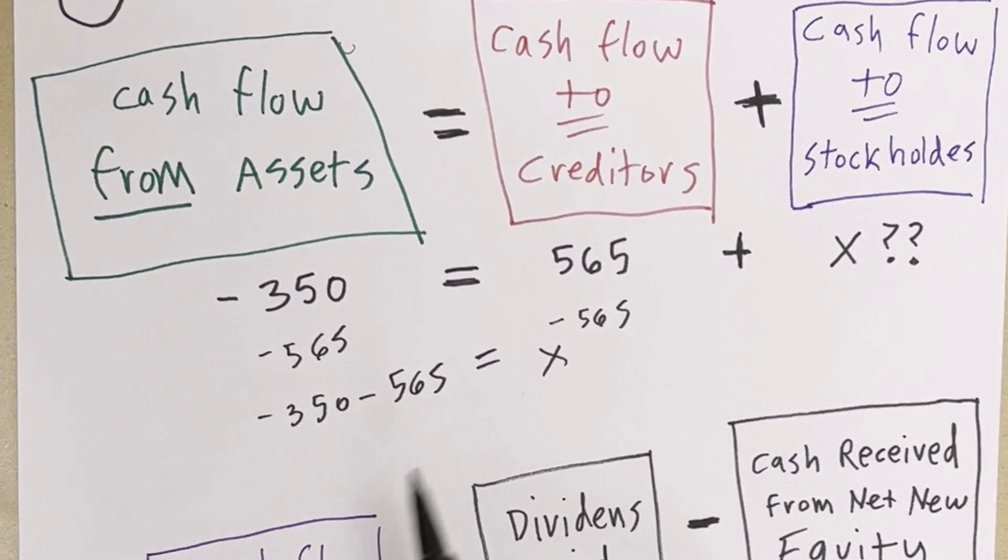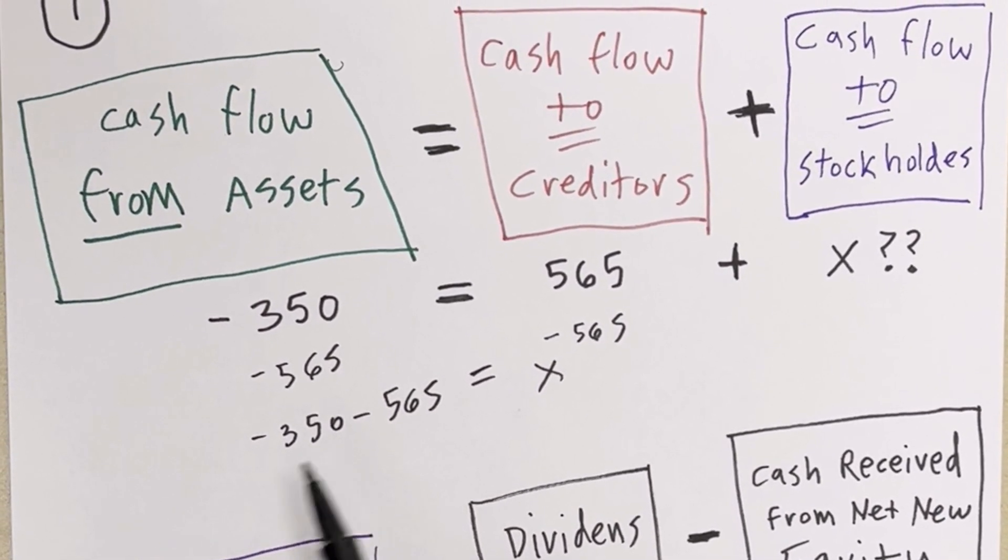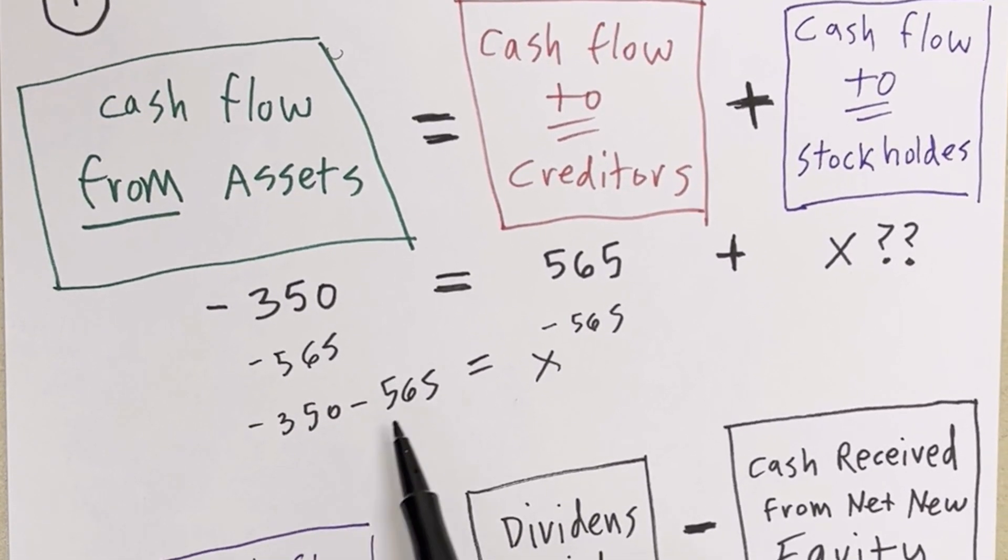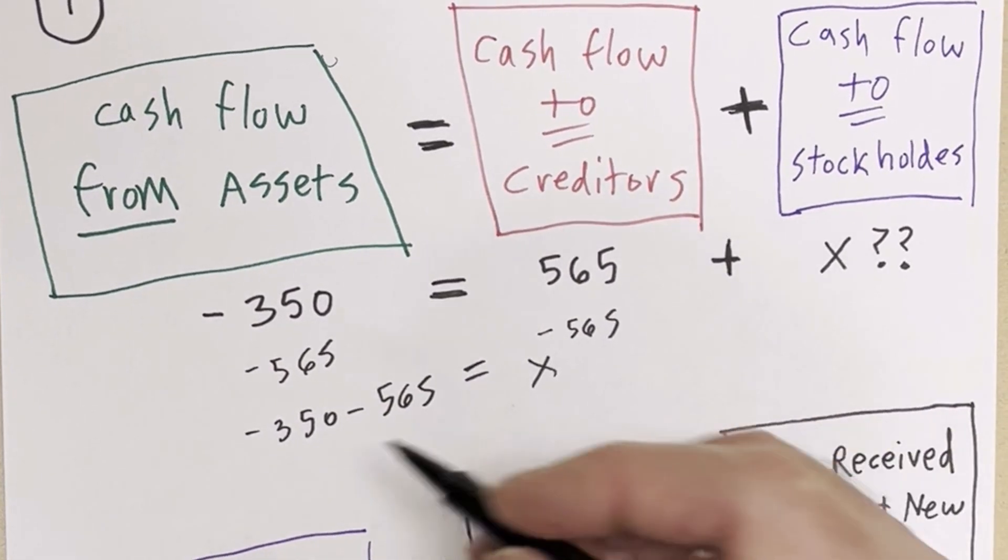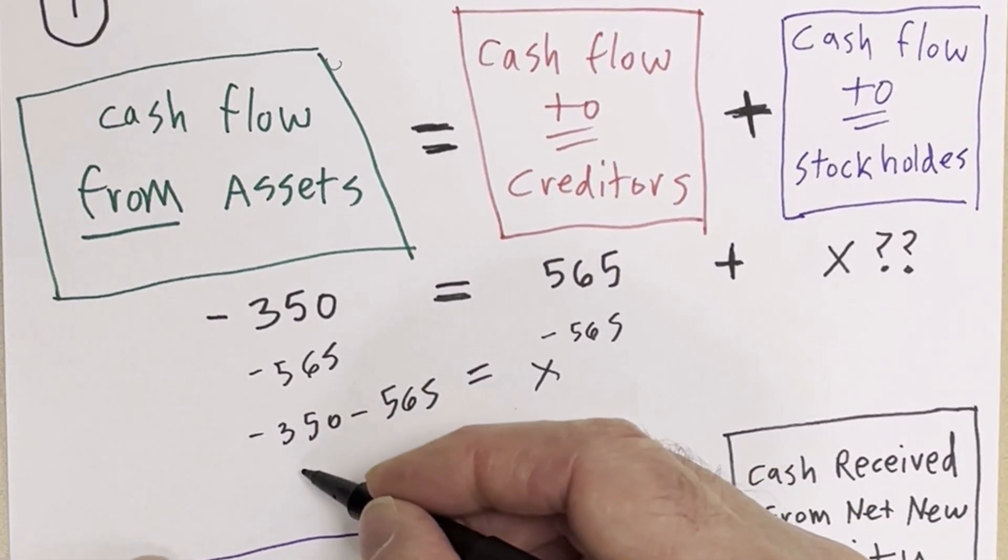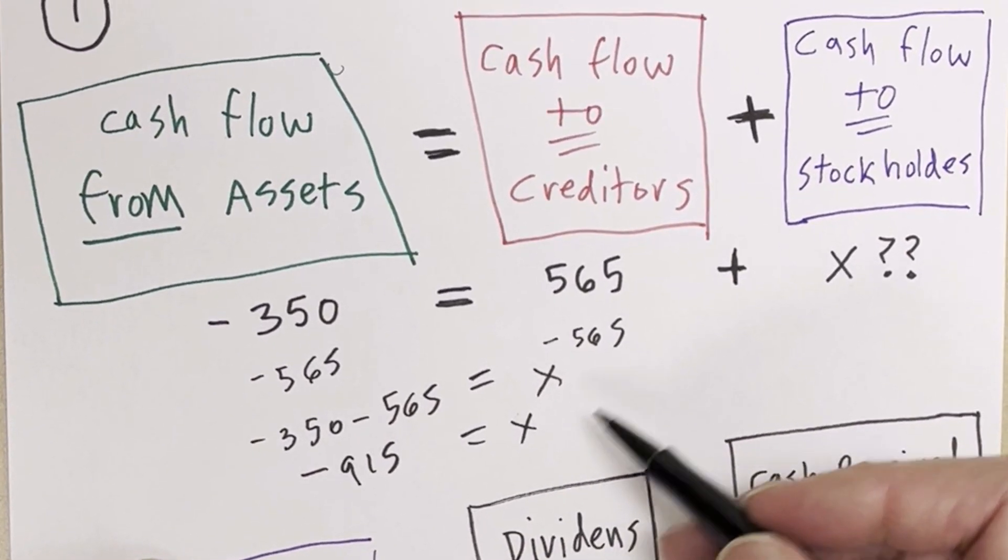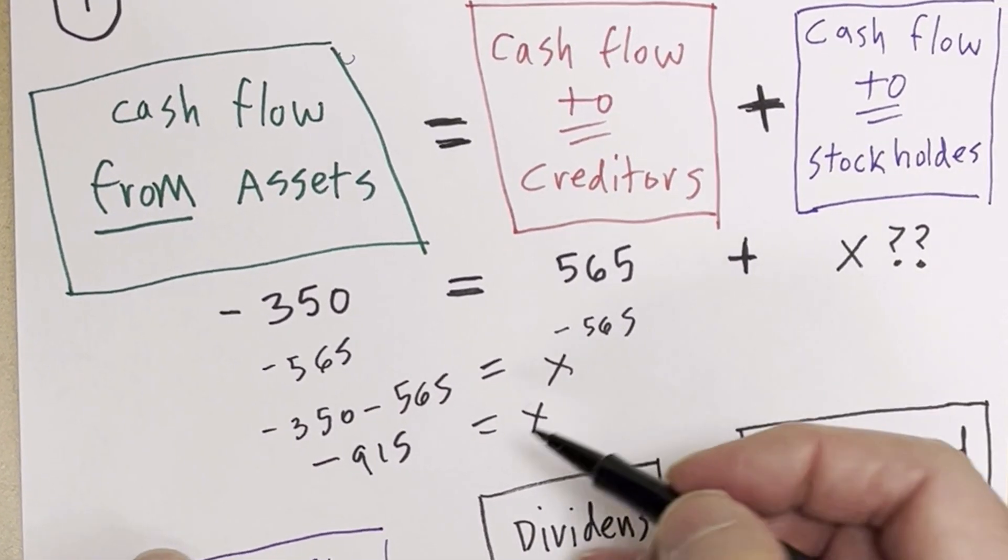Now, when you're creating the formula in the cell, that's just what you do. You click on that cell with the minus and minus this cell with the plus. But we can solve it. Minus 915 equals cash flow to stockholders.